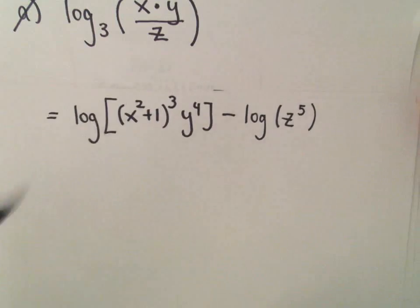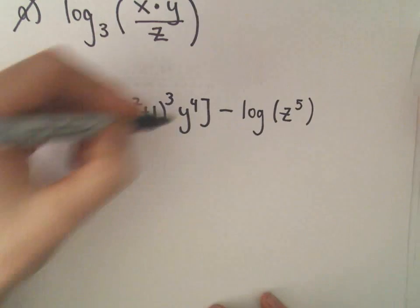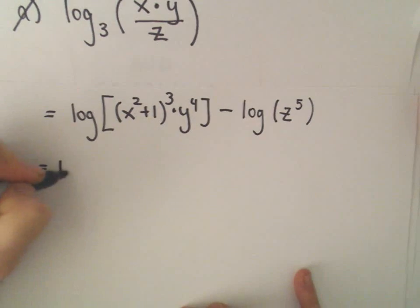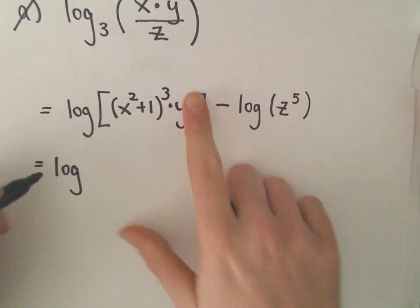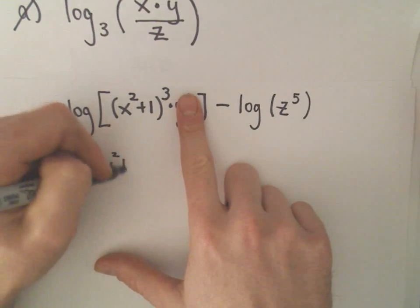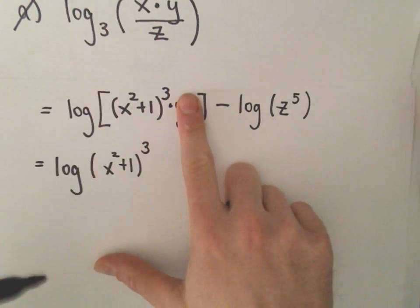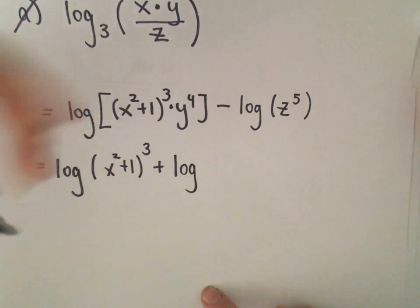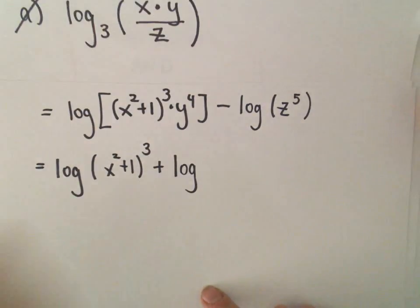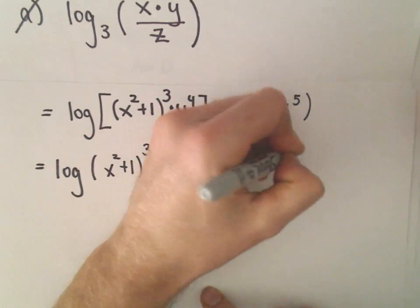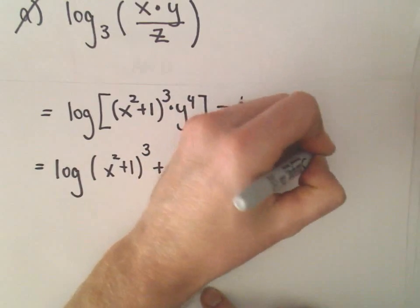And now, again, I think it's a lot like my first problem. I see a multiplication inside of here. So I'm going to break this up. My first term is addition. So I've got the logarithm of this first part, x squared plus 1 cubed, plus the logarithm of the remaining stuff, which is just going to be y to the fourth. I'll leave my logarithm of z to the fifth alone.